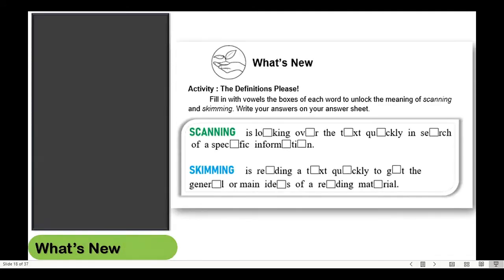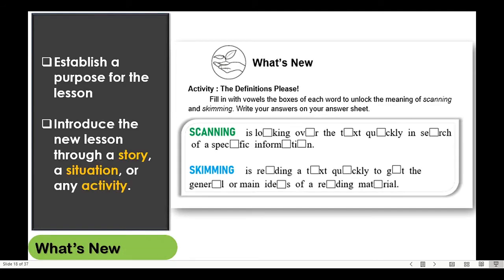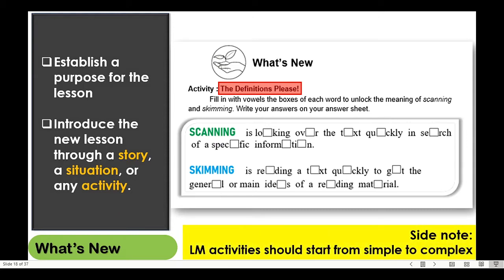What's new is the section of the module where you establish a purpose for the lesson. This is achieved by telling a story, narrating a situation, or providing an activity. In naming your activities, you can opt for something that is catchy or witty. This conveys a casual informal tone, making it more likely to be read by the learner. It is important to note that the activities we use on our learning module should start from simple, progressing to complex activities.